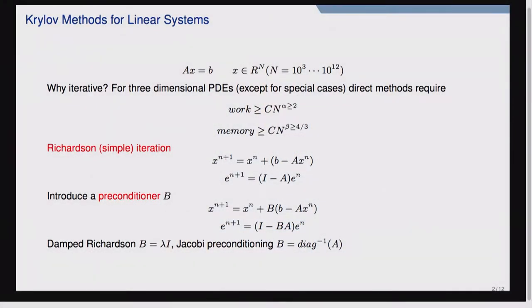Starting with the simplest possible approach for iteratively solving linear systems, there's something called simple iteration or Richardson, where you take your current solution, compute your current residual, and use that as an update for your next solution. A simple algebraic calculation shows that the error after the next iteration is (I minus A) times the error in the previous iteration. Only under very specific circumstances will this even converge — only if this operator is a contractive operator.